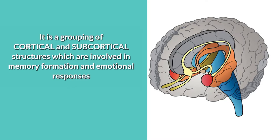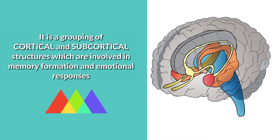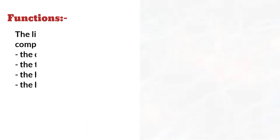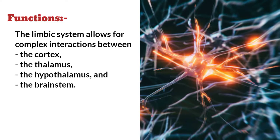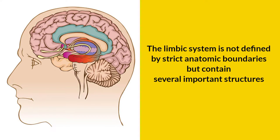It is a grouping of cortical and subcortical structures which are involved in memory formation and emotional responses. The Limbic System allows for complex interactions between the Cortex, the Thalamus, the Hypothalamus, and the Brainstem. The Limbic System is not defined by strict anatomic boundaries but contains several important structures.